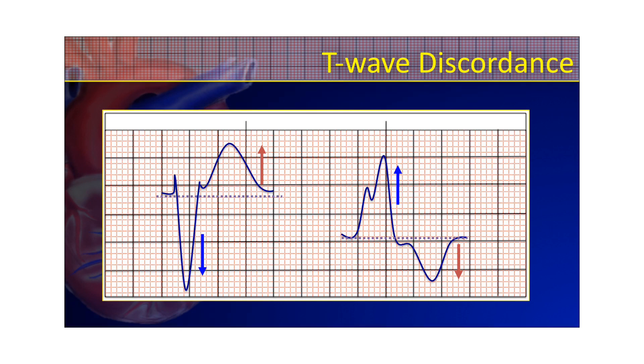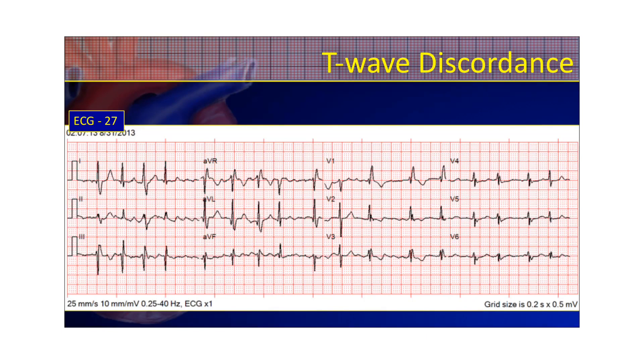T-wave discordance. I sort of mentioned this briefly when I was talking about LVH in the last video. But here's a better picture of it. Whenever your terminal wave is negative and your T-wave is positive, or if your terminal wave is positive and your T-wave is negative, you have T-wave discordance. This is a normal finding in bundle branch blocks. And it actually can cause the ST segment to be dragged in the direction of the T-wave.